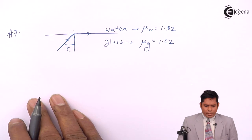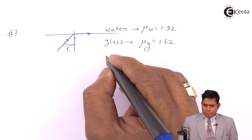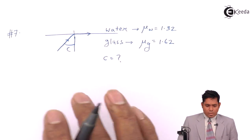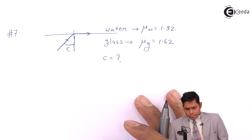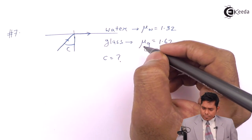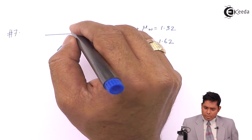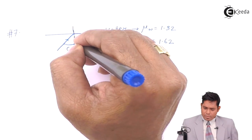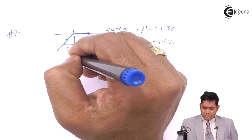Now, you have to find the critical angle, you have to find C. This is the question. And nothing else is given. Now, we must know that at what angle of incidence the angle of refraction is 90 degrees, that equals C.